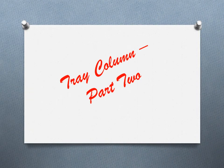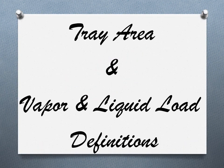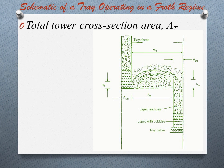Hello friends. In this video we discuss some terms related to different areas of a tray column. First we take total tower cross-sectional area, which is denoted by AT. It can be defined as the inside cross-sectional area of the empty tower.